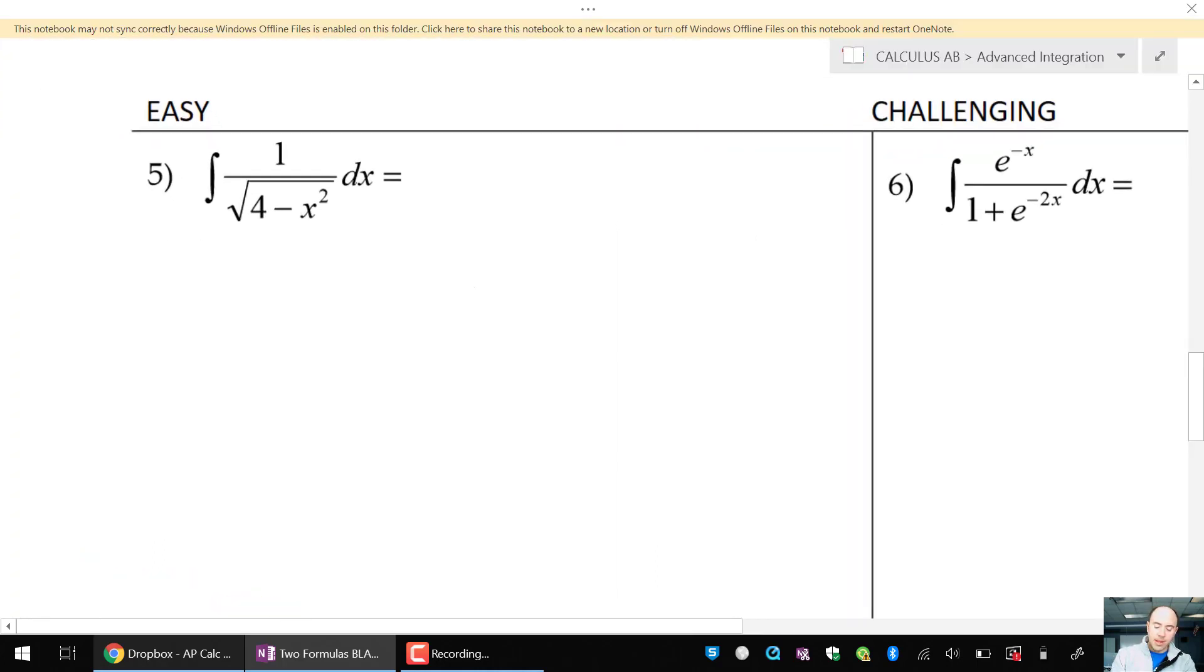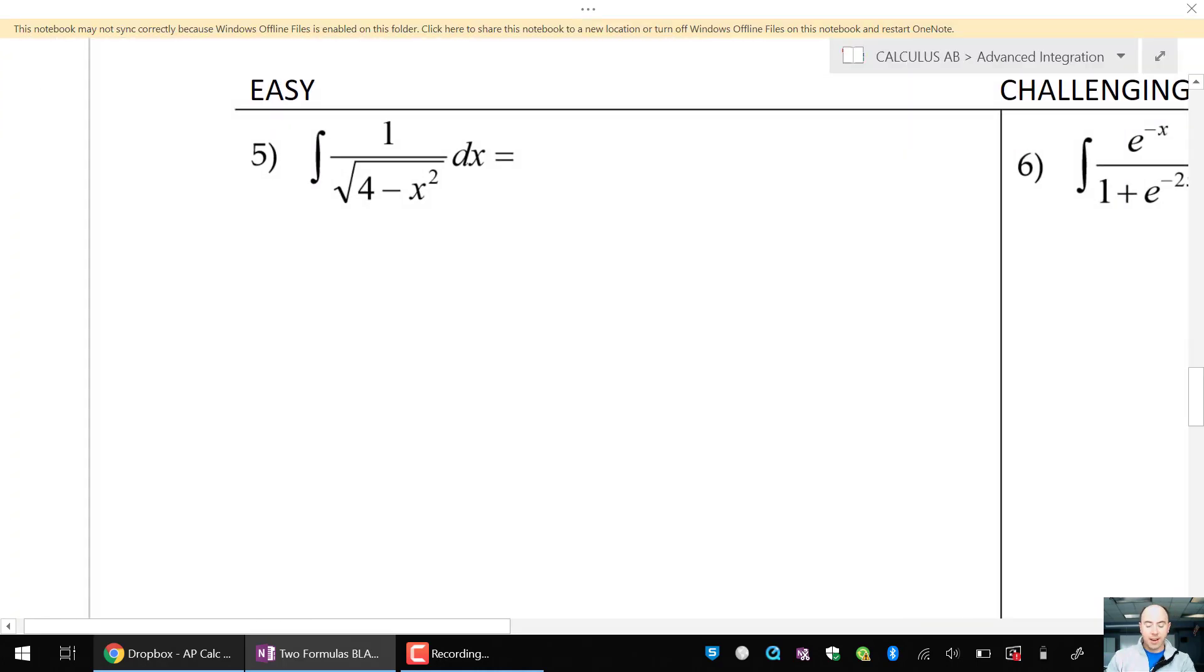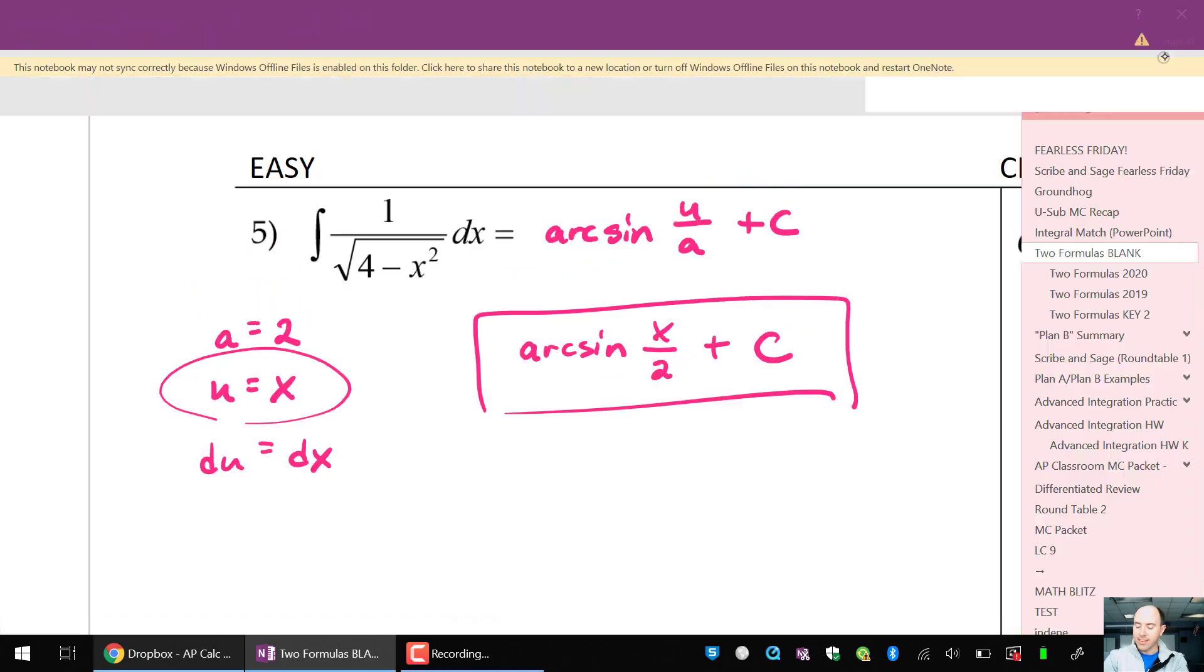Okay, I'm going to begin with the easy problem. So this to me looks like the arcsine formula. a is equal to 2 and u is equal to x. No need to do a u substitution because I have equivalency right there on u. du essentially is equal to dx, so there's no need to worry about a u sub. So I can just jump right to my solution of arcsine, well here's the formula, arcsine of u over a plus c. So this answer is going to be arcsine of x over 2. Nice and easy.